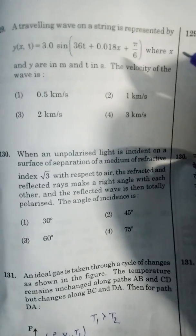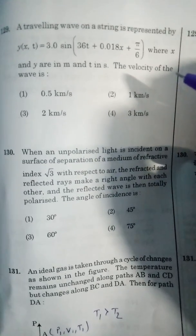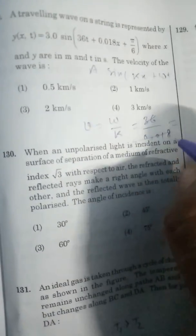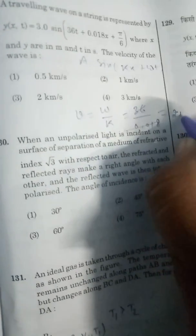In question number 129, a traveling wave along a string is represented by this equation in x and t. The velocity of wave is given by omega by k. Here the equation is in standard form a sin(kx + omega t). Omega is 36 divided by 0.018. Comparing this and solving, we get 2 km per second. Correct option is number 3.